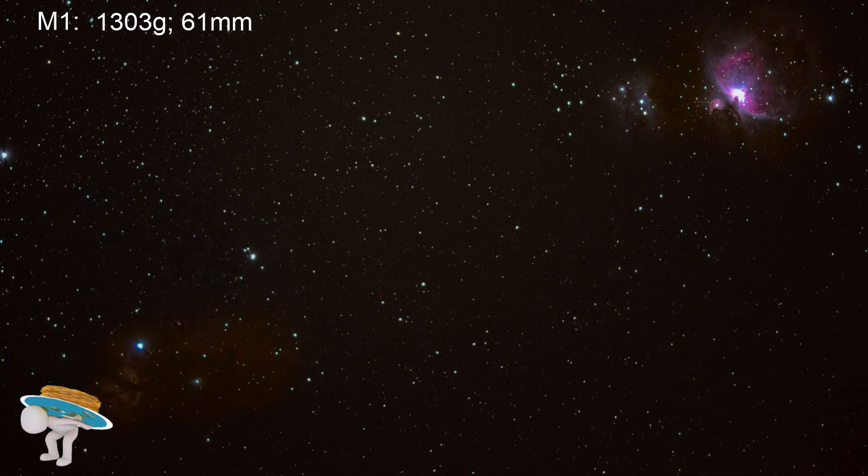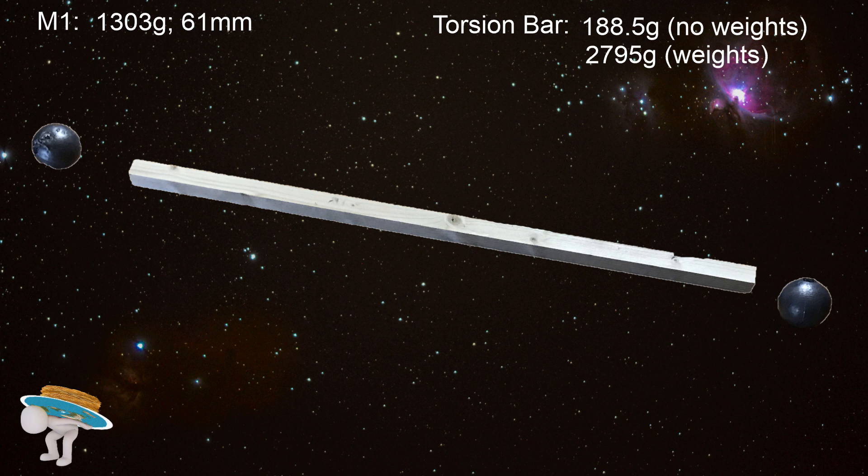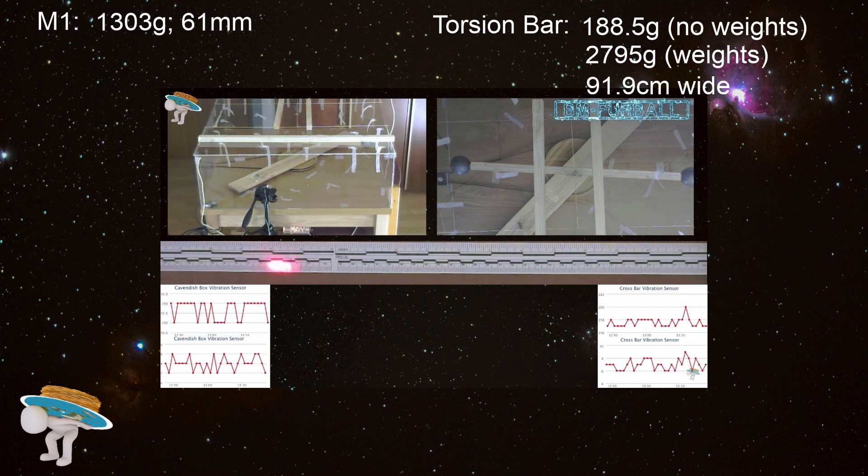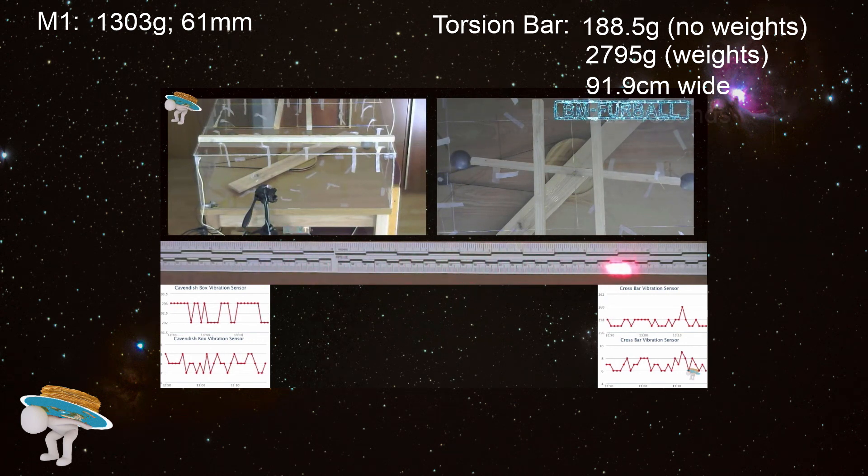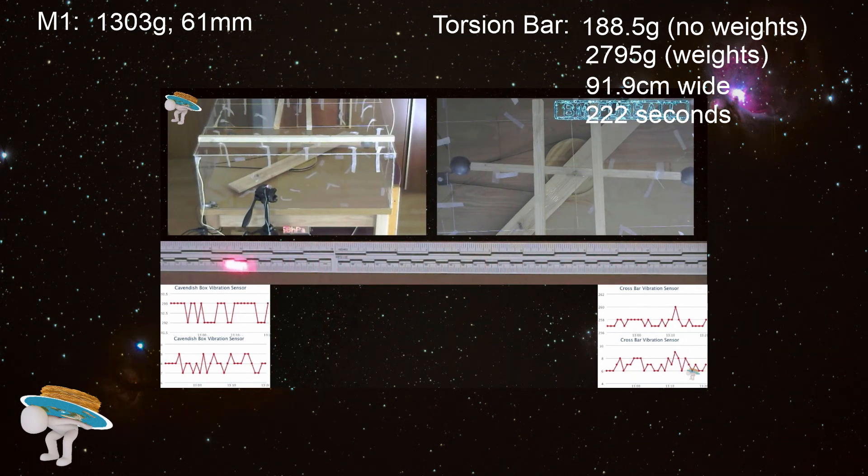The torsion bar itself weighed 188.5 grams with no weights attached, and 2,795 grams with the M1 attached. The bar itself was 91.9 centimeters from center of mass M1 to M1. During the trial phase, I determined that the natural oscillation of this torsion bar on the wire was 222 seconds. Regardless of how far the bar swayed, every oscillation averaged out to about 222 seconds.